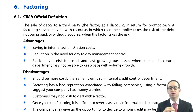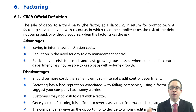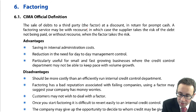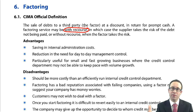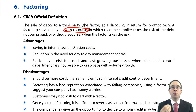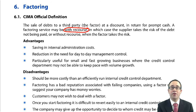Once you've transferred your receivables to the factor in return for cash, it is then the factor's responsibility for the collection of the cash. There are two different types of factoring. The first is with recourse, whereby the factor can come back to you to recover any uncollected cash. You bear the responsibility for collecting the remaining cash and the risk of any irrecoverable debts.